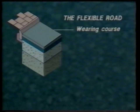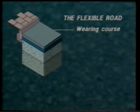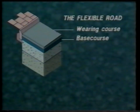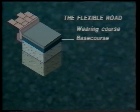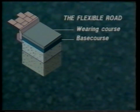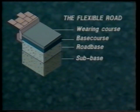The wearing course also provides an even skid resistant surface above the base course. The base course provides an even surface for the wearing course and spreads the traffic load over the road base. Both the wearing course and base course form the surfacing layers, and beneath them are two more layers: the road base and sub base.